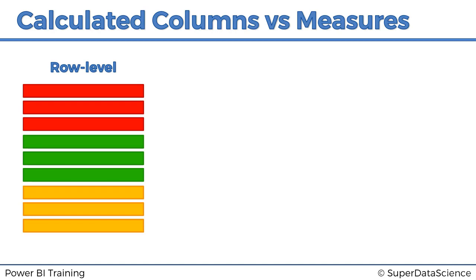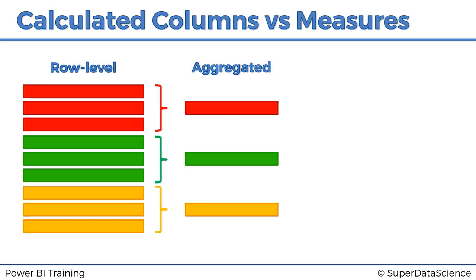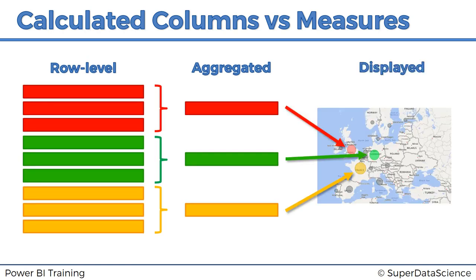Some rows might be in the UK, some in Germany, some in France, and they'll be aggregated together. In the case of sales, which we just put onto our map, they're summed up. All rows relating to a certain region are added up together, and then rows relating to another region are added up, and so on, and then they're displayed on the map. The main concept is that we have data at the row level, then aggregated to the level of granularity of our visualization, and finally displayed.